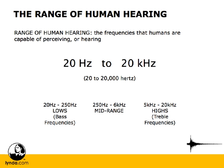When we work with audio, we tend to break this range down even a little bit further, kind of to simplify things, into three subcategories. We call them the lows, the mids, and the highs. As you would expect, the lows refer to the lower frequencies, the mids to the mid-range frequencies, and the highs to the higher frequencies.